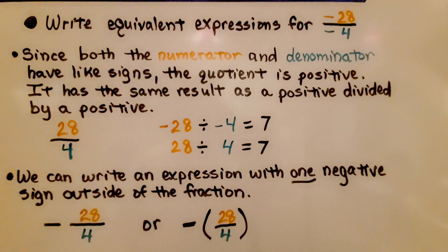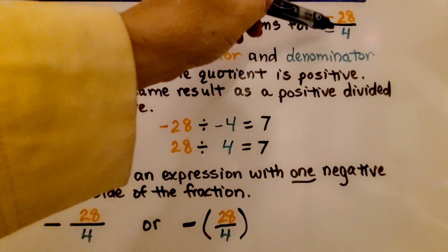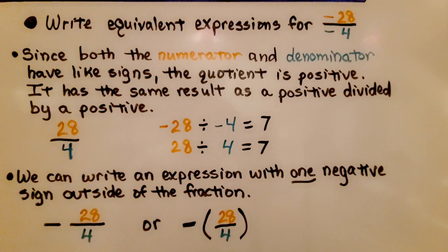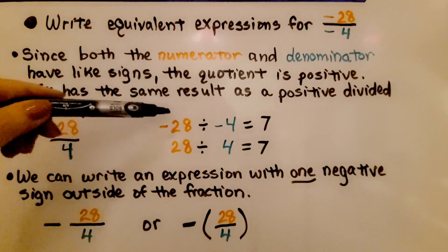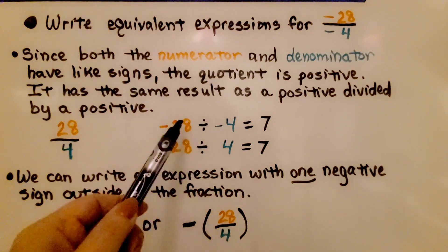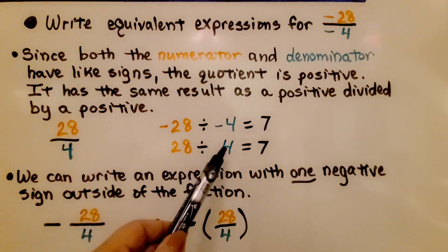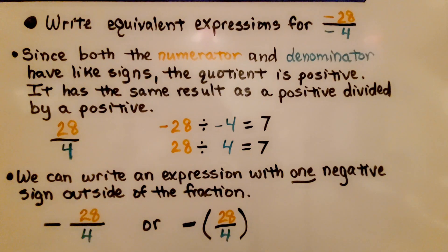Here we write equivalent expressions for negative 28 over negative 4. Since both the numerator and denominator have like signs, the quotient is positive — it has the same result as a positive divided by a positive. We could write it as 28 fourths. Negative 28 divided by negative 4 equals positive 7, and positive 28 divided by positive 4 also equals positive 7. Either way it's written, we get positive 7 — they're equivalent.